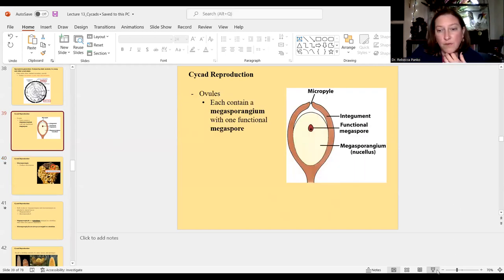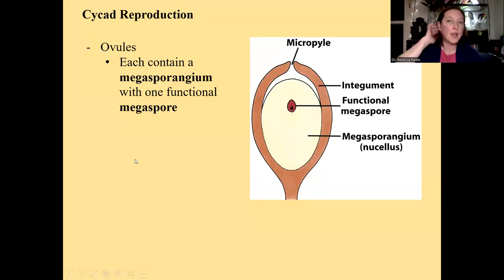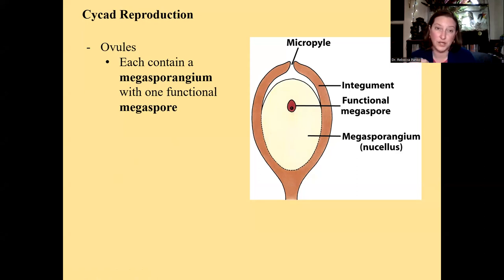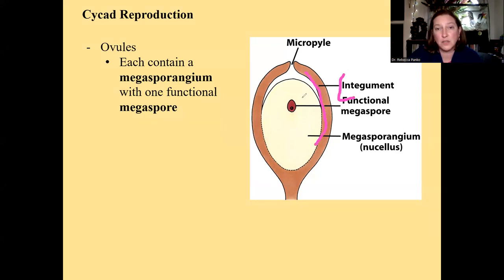We just finished talking about the sporophyte tissues and meristems. Now we're going to talk about cycad reproduction. We're in the seed plants, so we have to have ovules. We learned about ovules last time: they have a megasporangium, inside that one functional megaspore, and both are inside an integument — layers of protection. There's a hole at the top called the micropyle, where sperm is able to enter via the pollen grain.